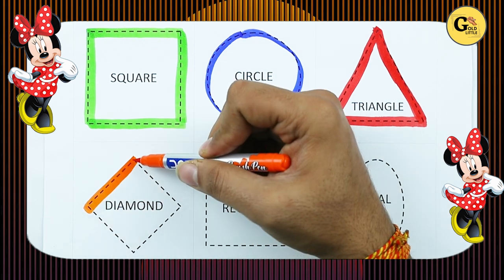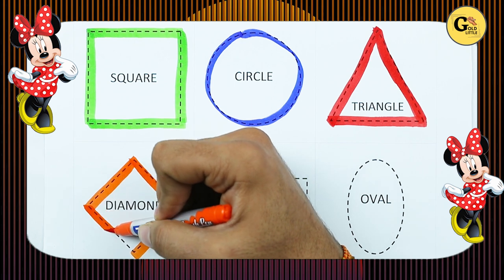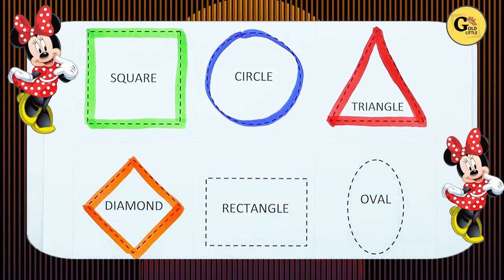One sliding line, two sliding line, three sliding line, four sliding line. It's a diamond, orange color, diamond.